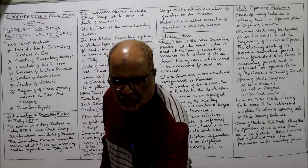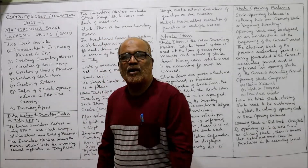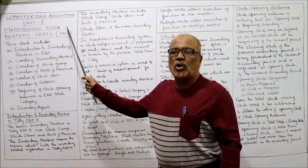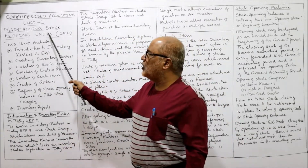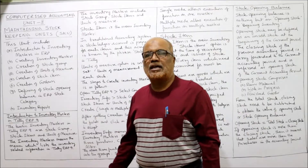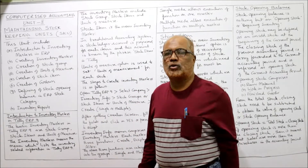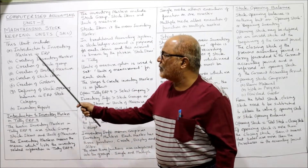Now I will start unit number 2, computerized accounting — that is maintaining stock keeping units, SKU. That is the name of the topic of this unit number 2.